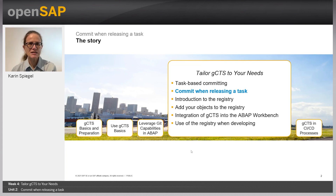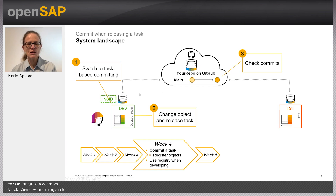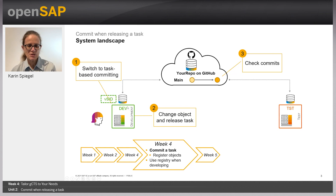For this course we implemented a special view where you can switch on task-based committing for your user – this is not part of the standard delivery. You can find the instructions in the additional material. We are going to use our Dev-Test landscape. Task-based committing has already been switched on for my demo user. After that, I'm going to change an object, and we will see that when changing the object and releasing the task, that is the only thing needed to get a new commit. We will check the new commit in the gCTS app.